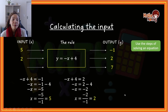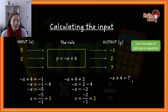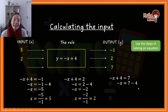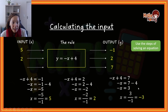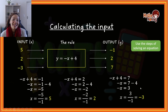The last one: the equation equals 7. Take the 4 over, simplify, take the negative 1 over, and the answer is negative 3. So the input is negative 3.